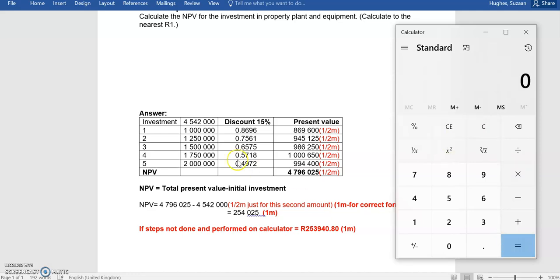If we follow the same rationale for each of our next figures, 1.5 million will be multiplied by 0.6575, and 1.75 million will be multiplied by 0.5718. We become very systematic about calculating these present value figures.